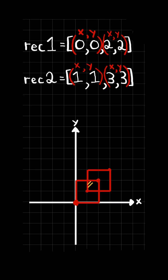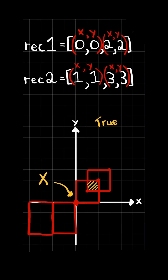If both rectangles overlap, then we return true. Let's assume we had a rectangle that only touched at a corner — this does not count as an overlap. Additionally, consider a rectangle that touches at the edge — this also does not count as an overlap.